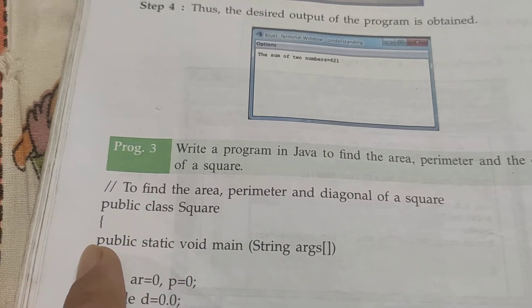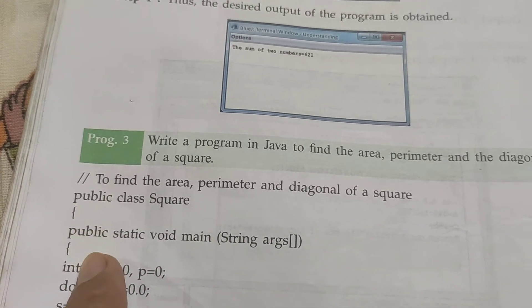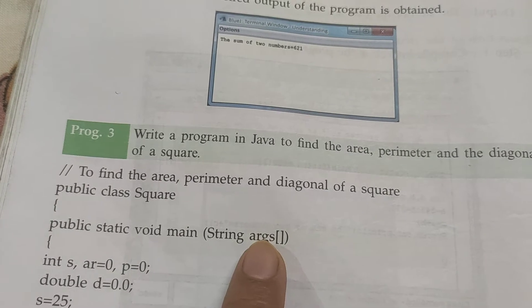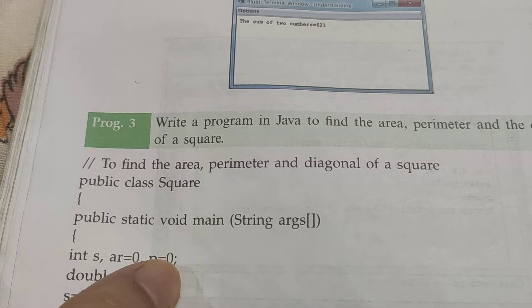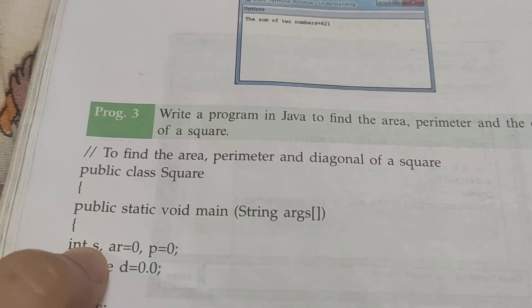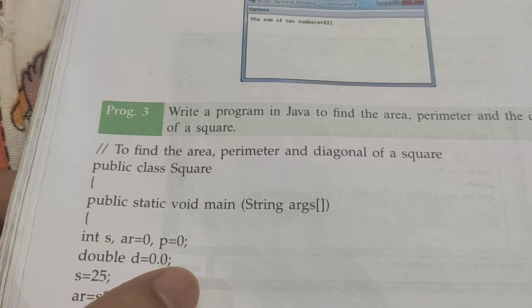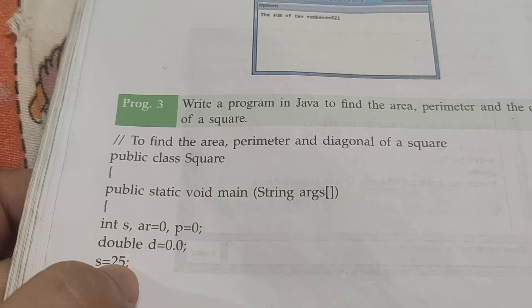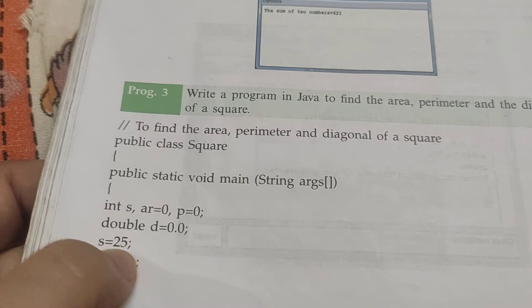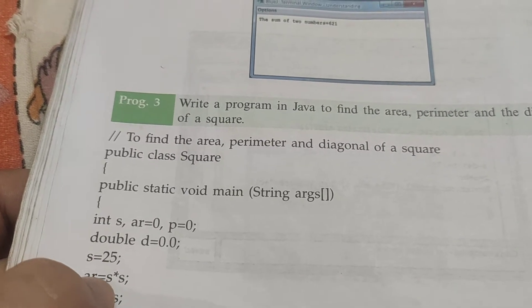You have a class named Square, then scope starts. Inside you have made a main function where you have written int s, area, and perimeter. We will calculate this as side, and double d equals to 0. Now you have side first input s equals to 25, so assignment operator worked and we have value input.